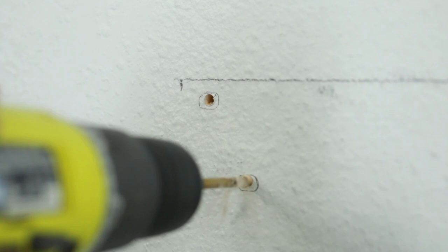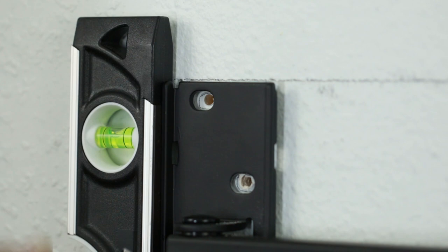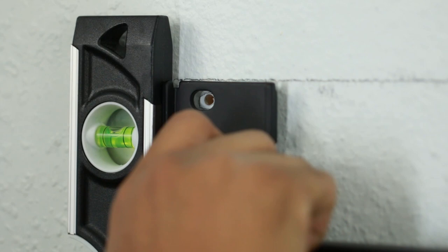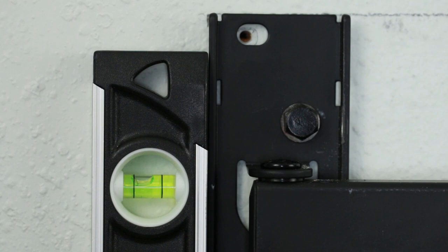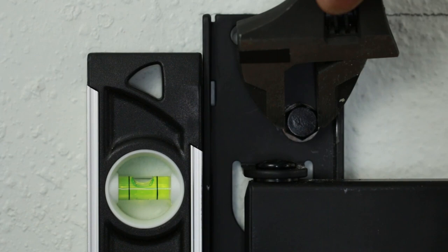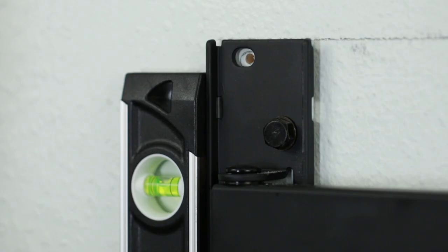Place your mount over the pre-drilled holes and again, use a level to ensure that it's straight. Loosely drive in the middle screw of your mount. At this point, you don't want to tighten it yet just because you want it to be loose enough to make adjustments. The holes on your mount are oval so that you can make minor adjustments when you're installing your mount. Once your mount is leveled, tighten the middle screws and then drive and tighten the remaining screws.